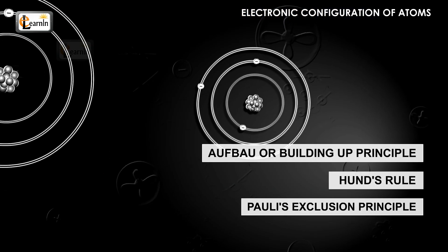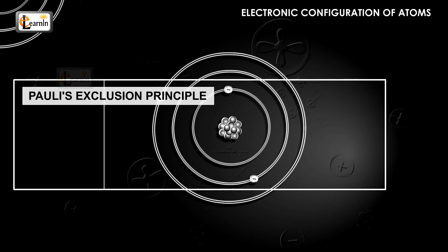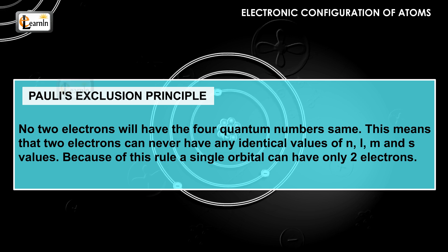The third important rule for electronic configuration, that is, Pauli's exclusion principle, states that no two electrons will have the four quantum numbers the same. This means that two electrons can never have identical values of n, l, m, and s values. Because of this rule, a single orbital can have only two electrons.